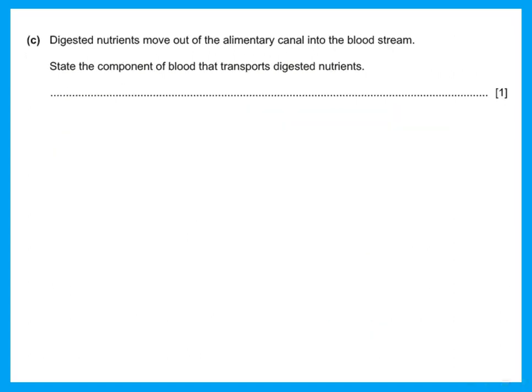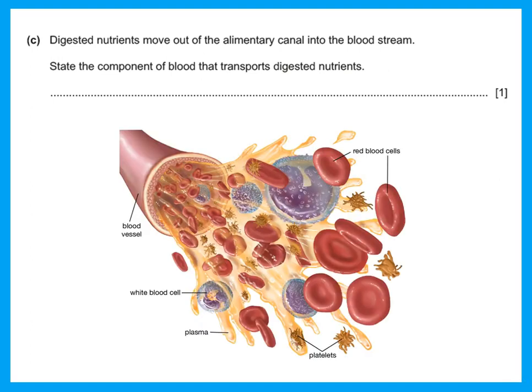Digested nutrients move out of the alimentary canal into the bloodstream. State the component of blood that transports digested nutrients. Blood contains red blood cells (transport oxygen), white blood cells (protect from microbes as part of the immune system), and platelets (help in blood clotting when you have a wound). The liquid part of blood is called plasma — that is what transports the soluble molecules obtained from digestion.